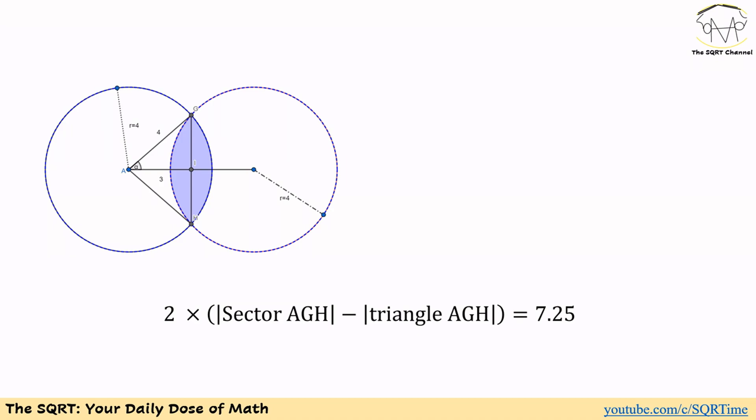Since we have the area of sector AGH and the area of triangle AGH, if we subtract the triangle's area from the sector's area we get half of the blue shaded region. Multiplying that by 2 gives us the total area of the shaded region, which is 7.25.